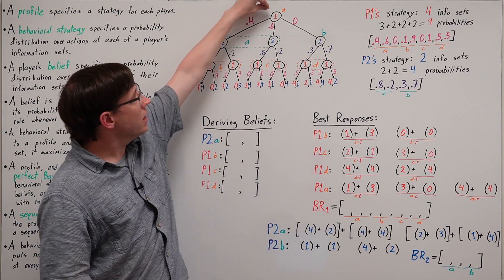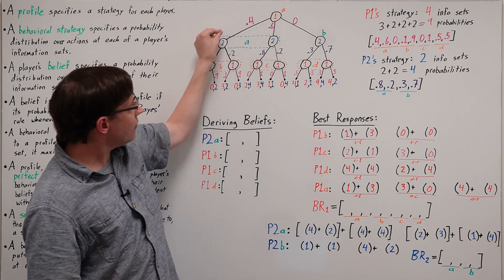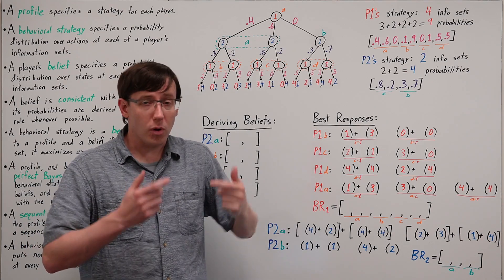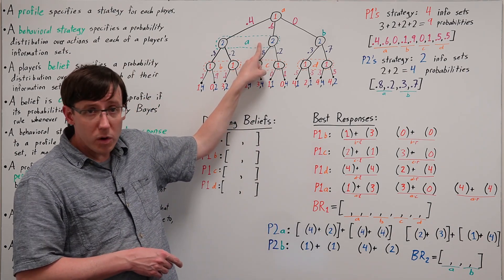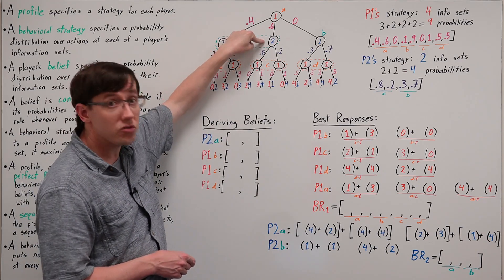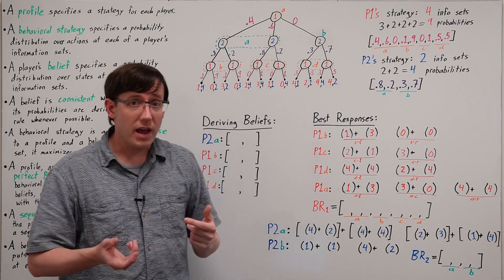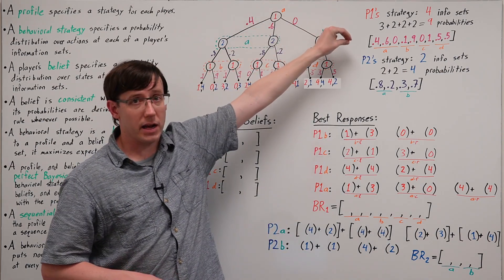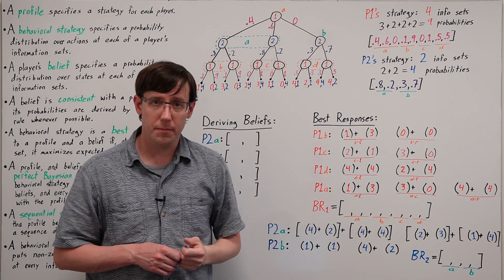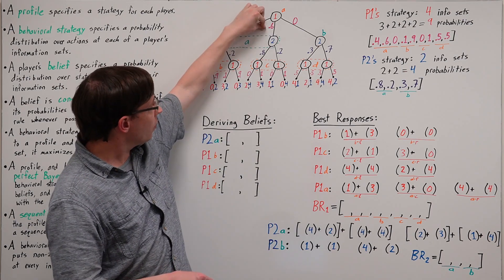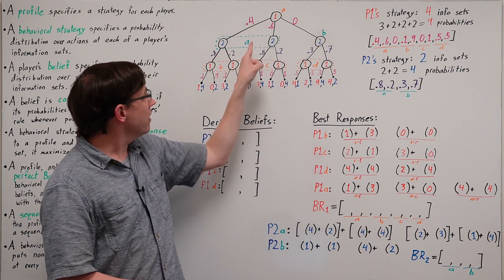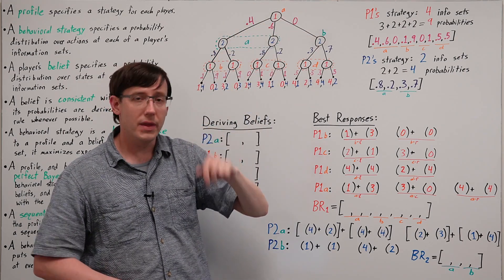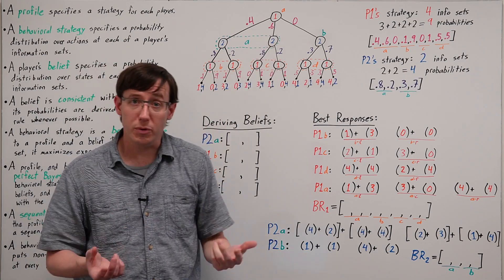We say that a belief is consistent with a strategy profile if those beliefs are derived correctly from the randomization that the players and/or the game is doing. For example, if at the first node of this game, player 1 plays the left action with probability 0.4 and the middle action with probability 0.6, then the consistent belief for player 2 at their information set A would be a 0.4 chance they are in this node and a 0.6 chance they are in this node. In addition, consistent beliefs have to update probabilities using Bayes' rule, meaning that if there were some probability on other actions, they would have to renormalize to their information. So for example, if the probability distribution were 0.4, 0.5, 0.1, and then player 2 finds themselves at this information set, they will renormalize based on the information that this possibility didn't happen, and so they would believe a 0.4, 0.5 distribution over the nodes.